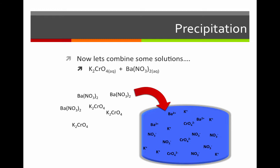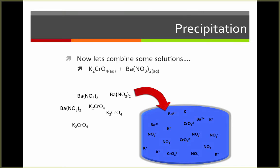In this example, we've put both barium nitrate and potassium chromate in water, which will cause both compounds to dissociate. With three barium nitrates, we get three barium ions and six nitrates in solution, since it's Ba(NO3)2. Likewise, the three potassium chromates give us six potassiums and three chromates.